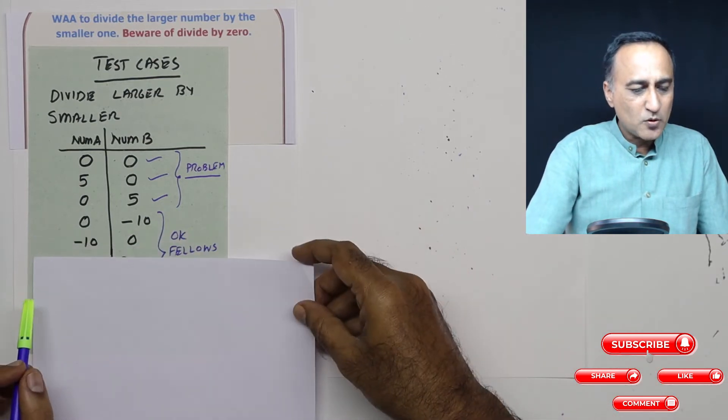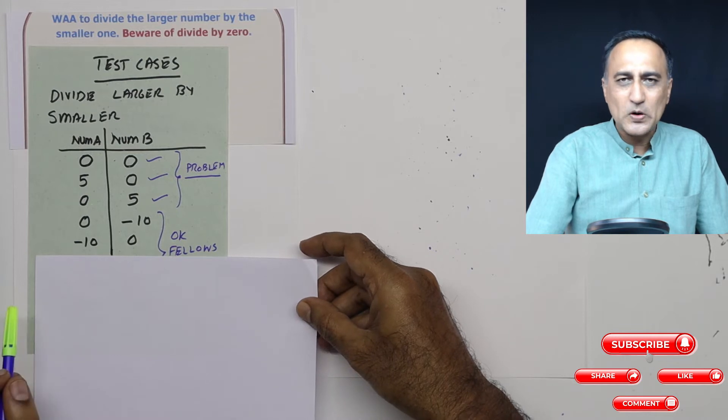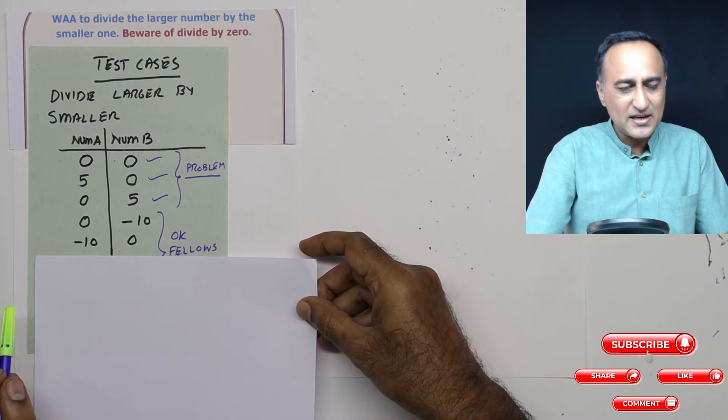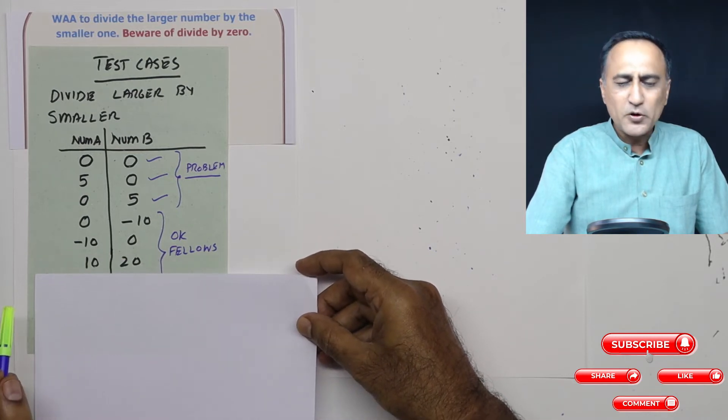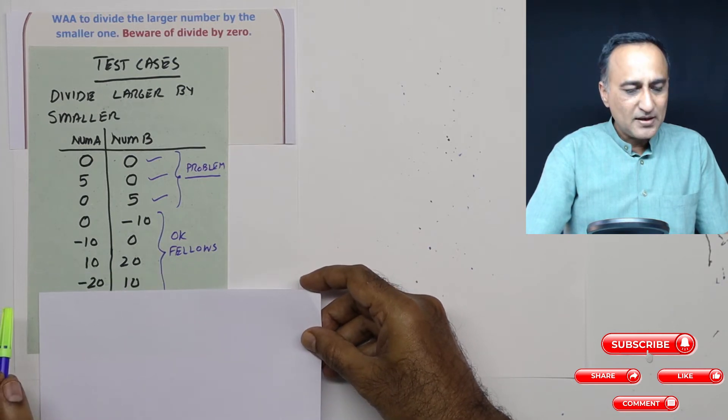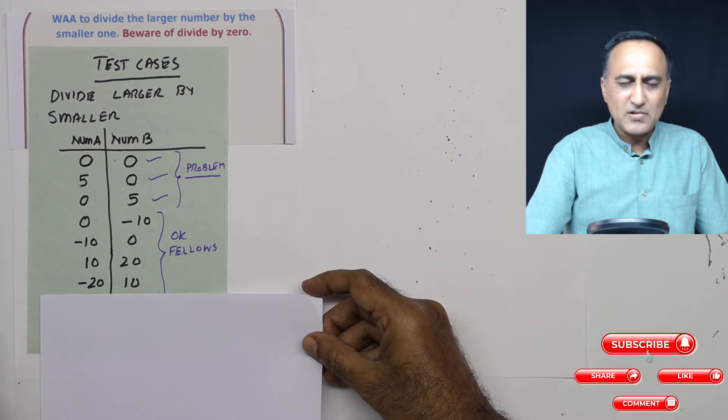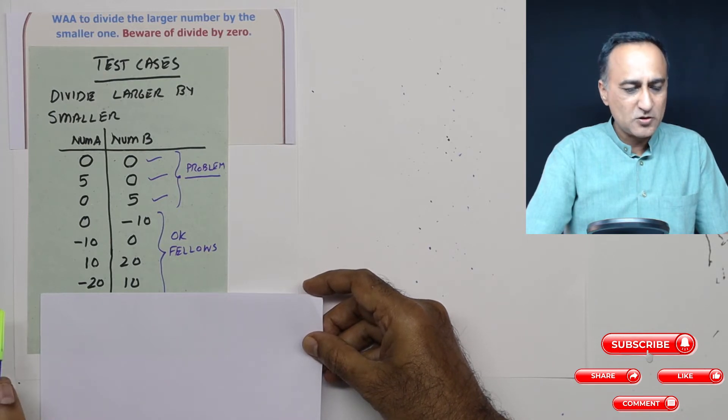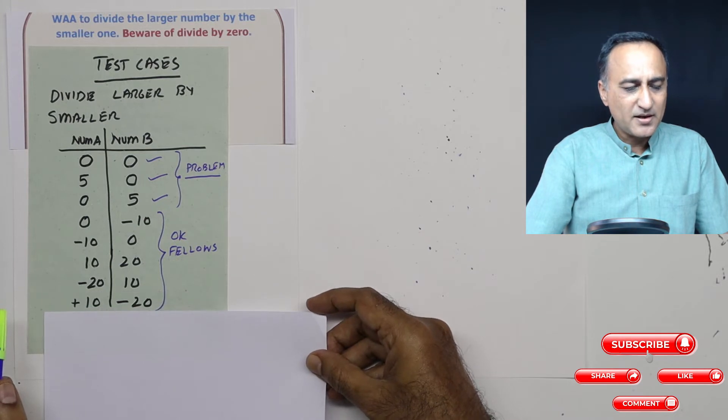Let's take a look at one more: minus 10, 0 again not a problem because 0 upon minus 10 is again 0. 10 upon 20 absolutely not a problem. It is going to be 2. Minus 20 upon 10 again not a problem because 10 upon minus 20 is going to be minus 0.5. Then 10 upon minus 20 again not a problem.